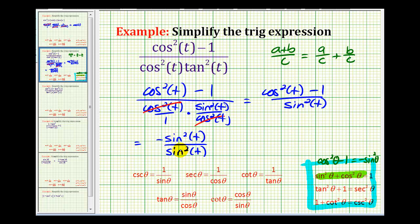Well, negative sine squared t over sine squared t is just going to equal negative one and now we've simplified this trig expression. And you can see it simplified dramatically.